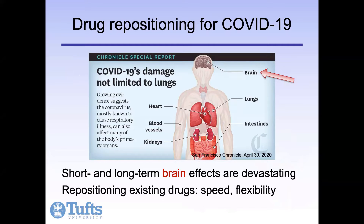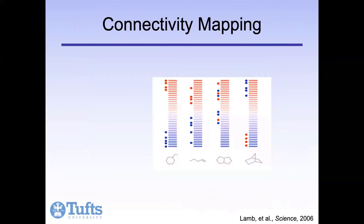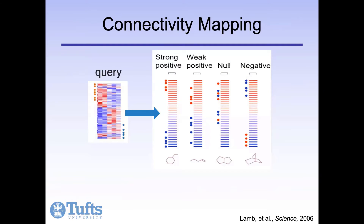There are many methods of drug repositioning, several of which rely on transcriptomic data, but historically these approaches have been somewhat less effective for neurological disorders. One of the most common approaches is called connectivity mapping. The idea is to create a database characterizing the transcriptomic effect on cells of treatment with various drugs, then build a query reflecting the transcriptomic effect of a disease on relevant cells, and find drugs in the database that reverse the query effect, so that genes that are up-regulated in disease are down-regulated by the drug and vice versa.